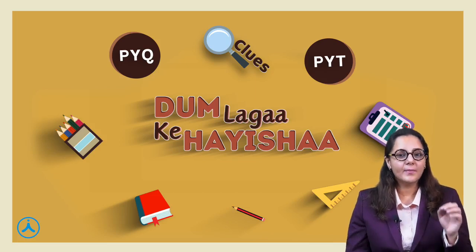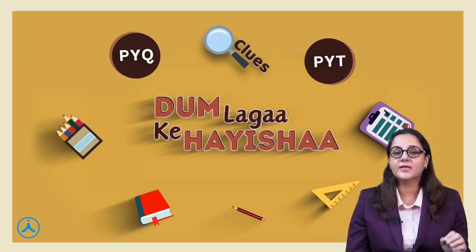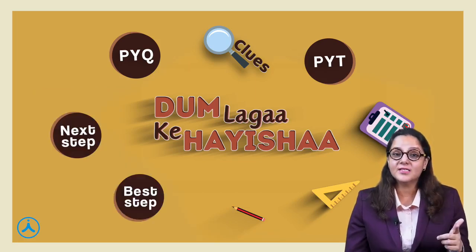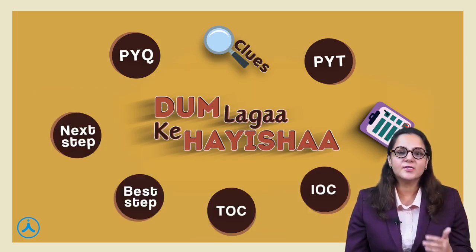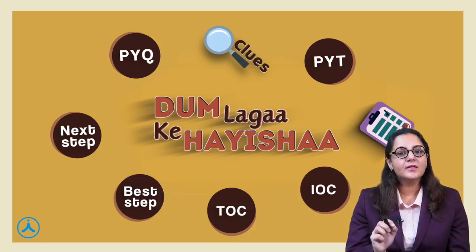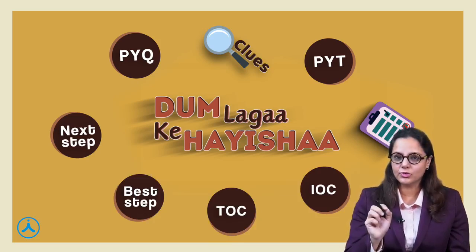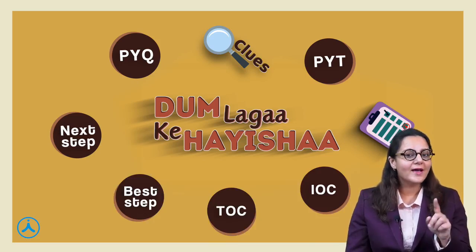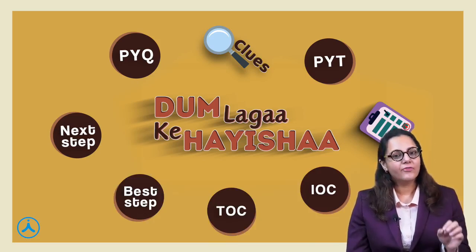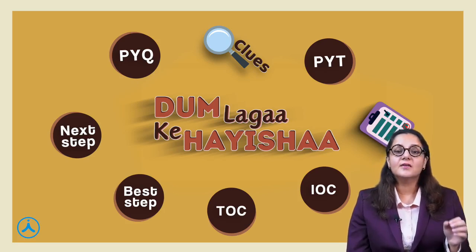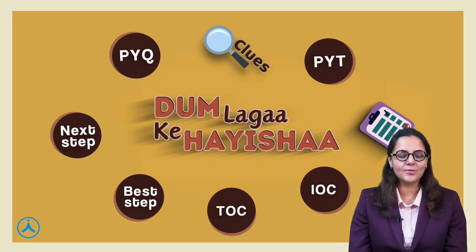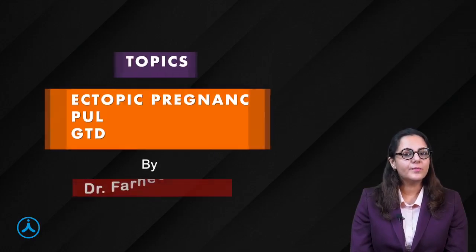Many times it happens that we read a topic from many books and still we are not able to answer the next step — the treatment of choice, investigation of choice, and so on. We are bringing this clear-cut information to you so that at the end of the series you are left with only clarity and no confusion. After every discussion there are a set of questions that will challenge your concepts and bring you closer to cracking the exam. Let's start — the first topic is ectopic pregnancy and gestational trophoblastic neoplasia.